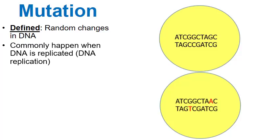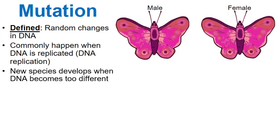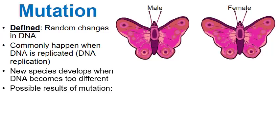One of the key factors in speciation is mutation, because mutation changes up the DNA in an organism. If the DNA in one group of organisms is not compatible with another group, they are members of different species. We have to look at mutation as a way to change up DNA. Let's go over three possible results of a DNA mutation using these butterflies.